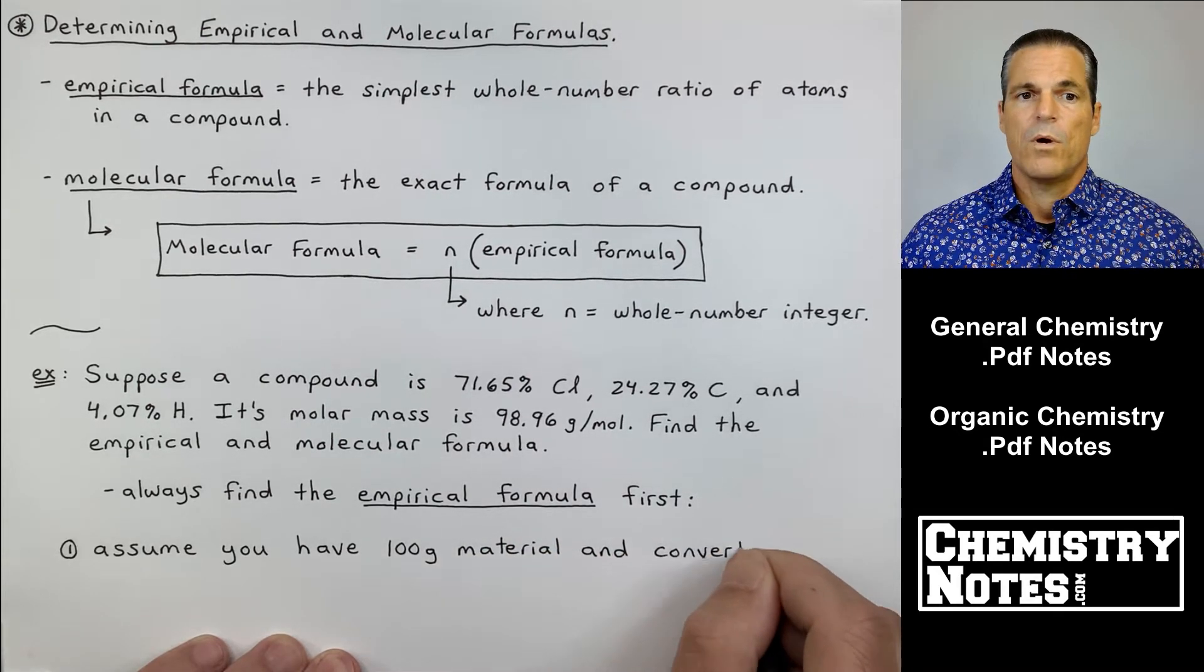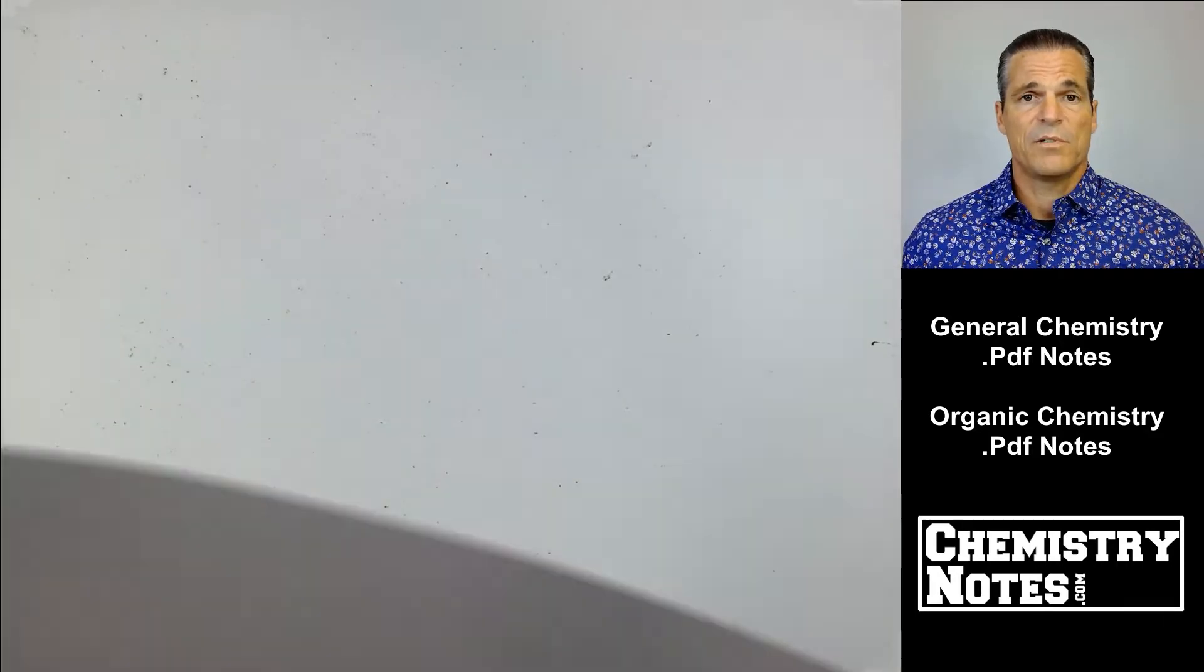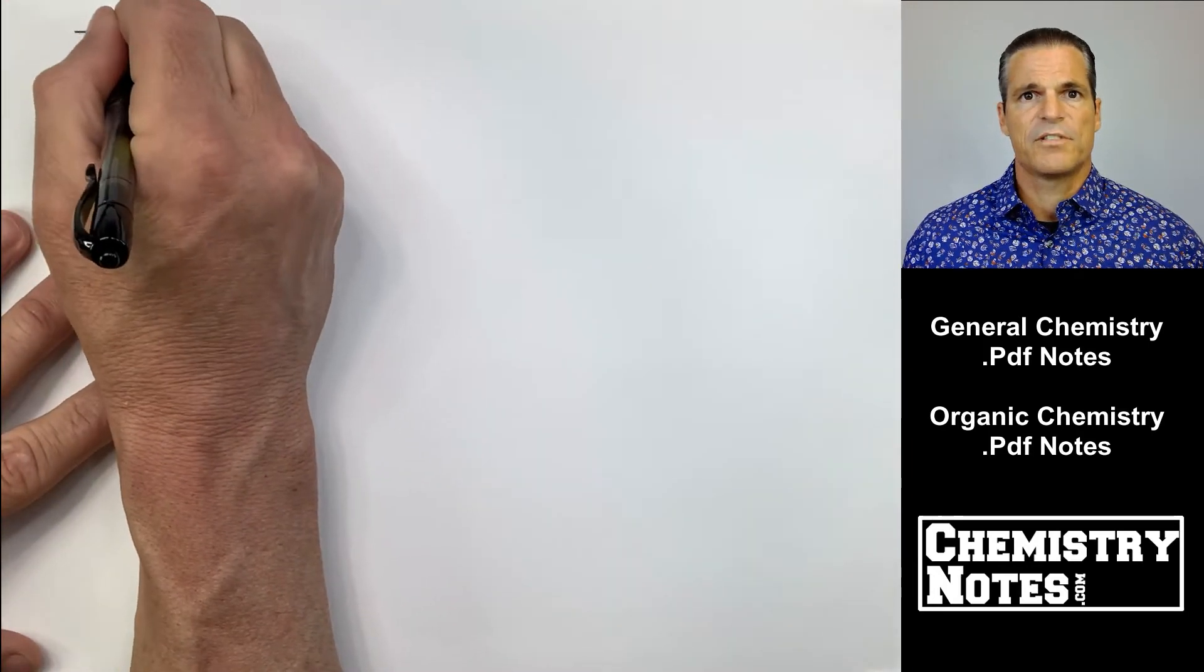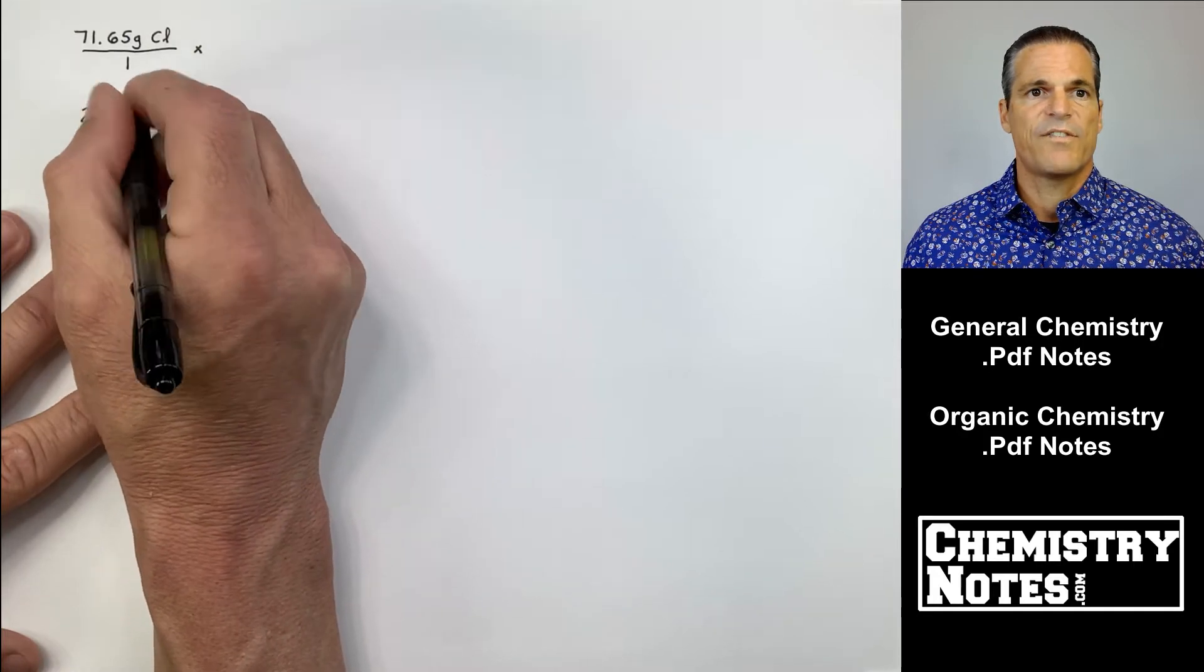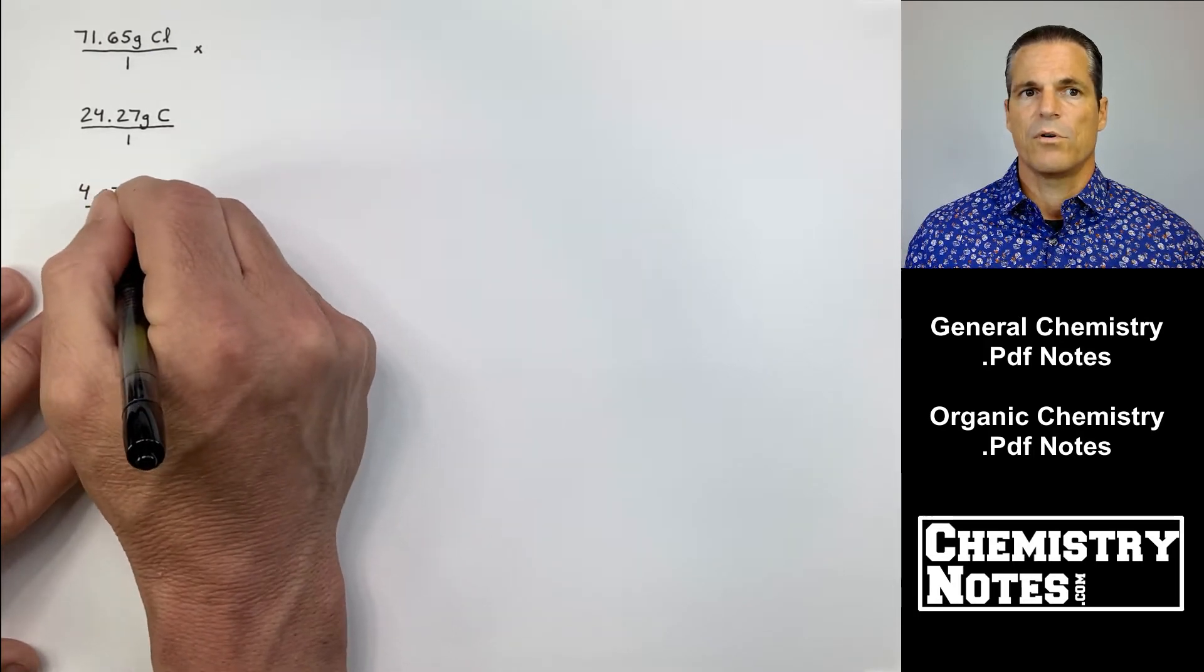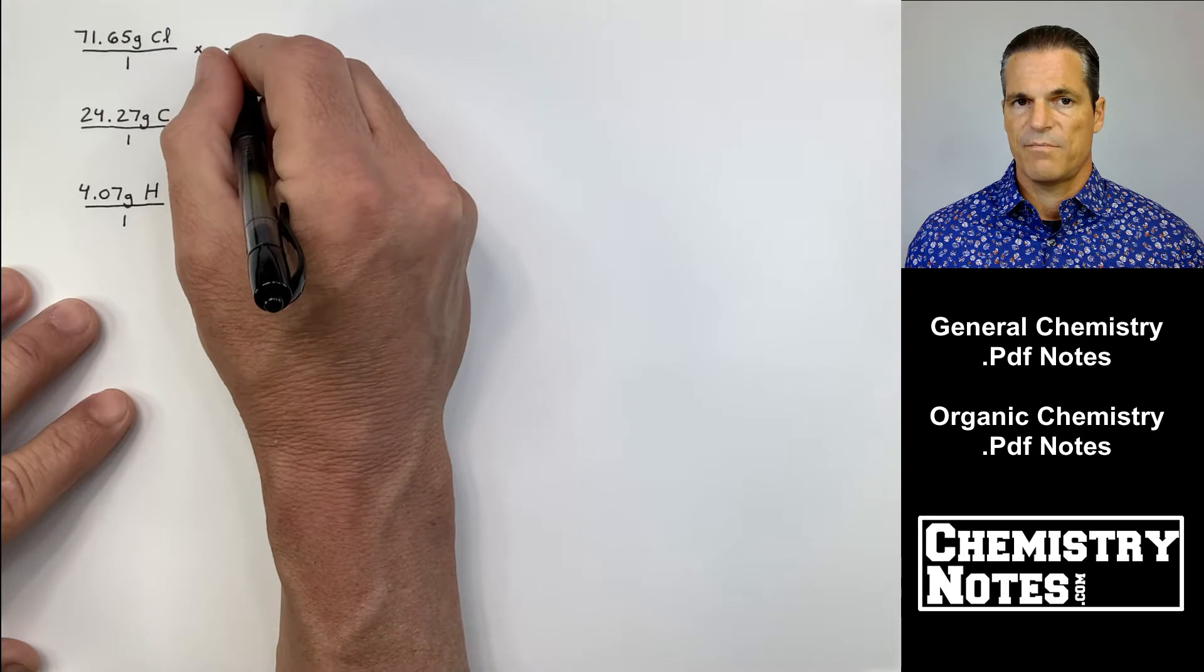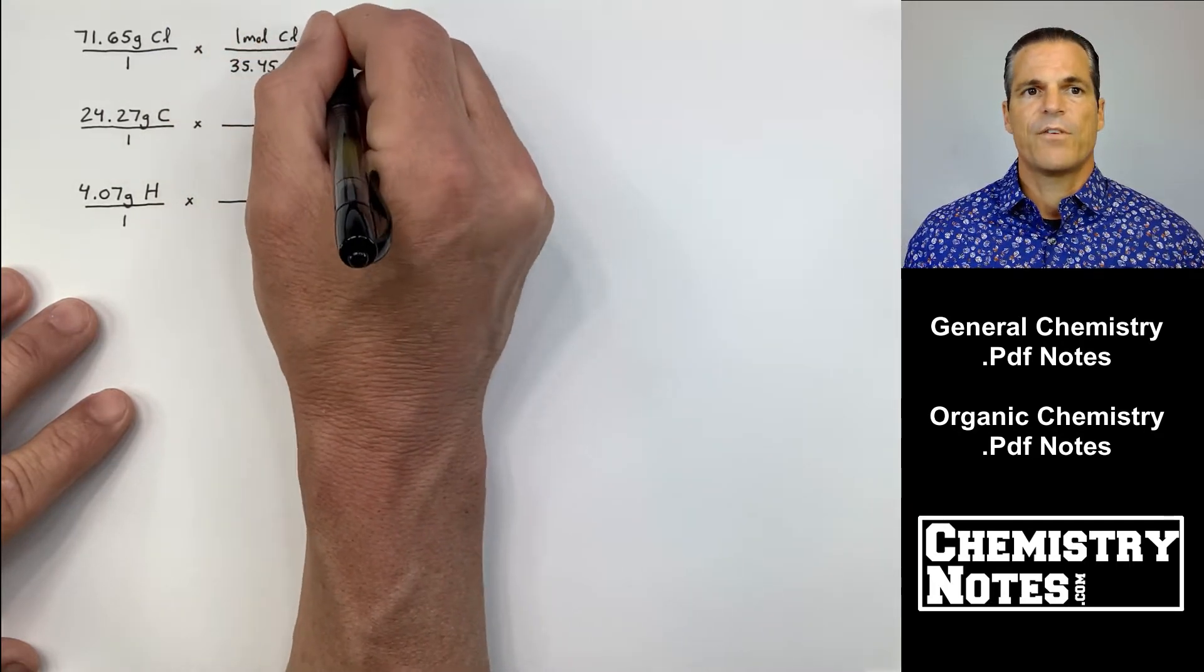Here's mini rule number one. They give us percentages. If we just assume we have a hundred grams of material, those percentages immediately become grams. 71.65% chlorine becomes 71.65 grams of chlorine, 24.27 grams of carbon instead of percent, 4.07 grams of hydrogen.